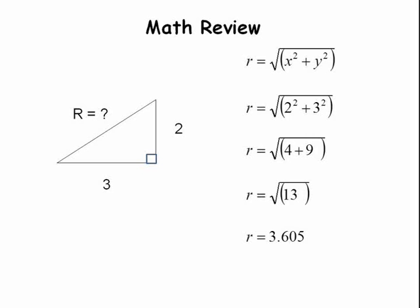For instance, if one side is 2 and the second side is 3 units long, then 2 squared is 4, 3 squared is 9, 9 plus 4 is 13. The hypotenuse or r is equal to the square root of 13.